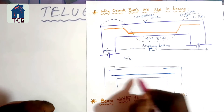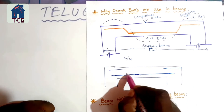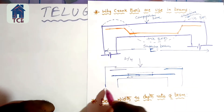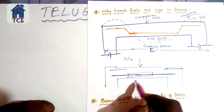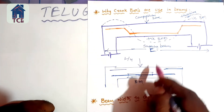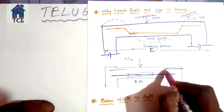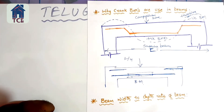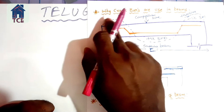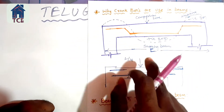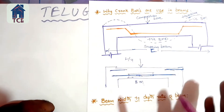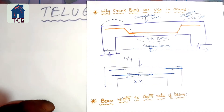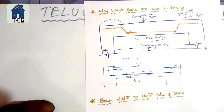This is an extra bar in the tensile zone, acting in the tensile zone. If it is in compression, it will still act in the tensile zone, carrying the load and enabling bending moment resistance. This is the main concept of the cranking process — crank bars reduce bending moment and increase the strength of the beam.